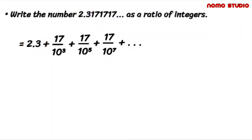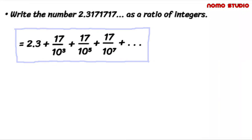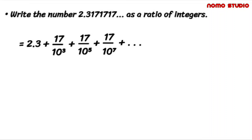And now, this is what we call a geometric series. Notice that the first occurrence of 17 goes out to the first, second, third decimal place. So we rewrite it as 17 over 10 cubed.